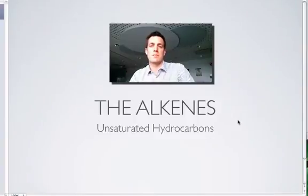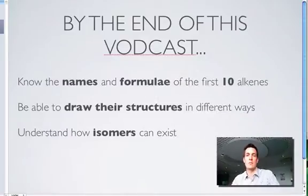This is the second screencast about hydrocarbons, focusing on the unsaturated ones called alkenes. By the end of this film, you'll be able to name and draw the formula of the first 10 alkenes, which shouldn't be too hard if you know how to do it for the alkanes, and you should be able to draw their structures in a few different ways. You'll also learn a little about how isomers can come about with these molecules, though that will be covered in more detail in another film.